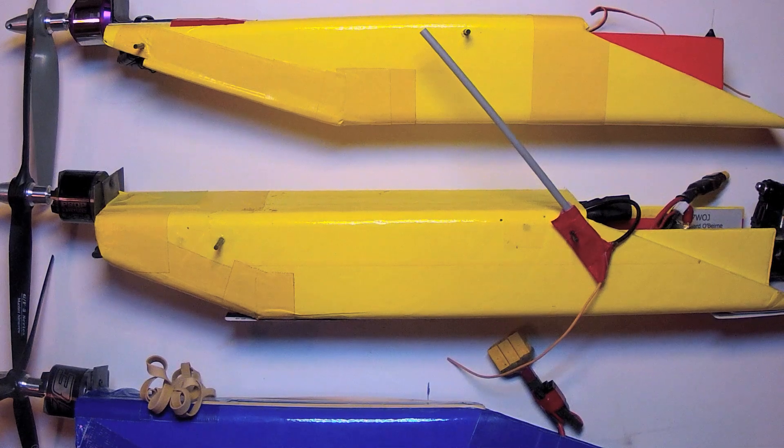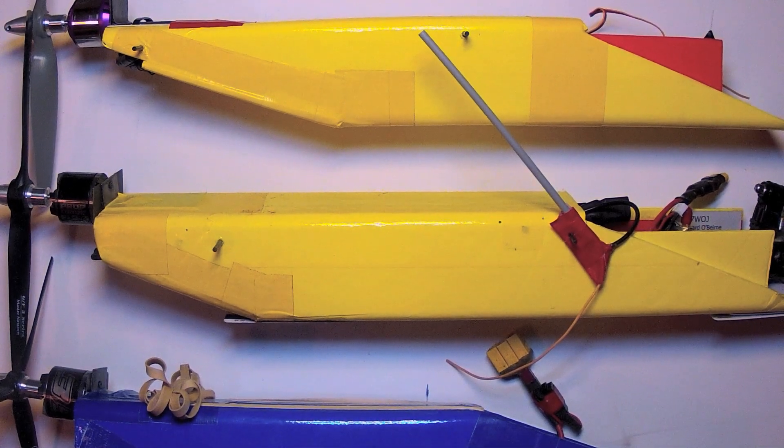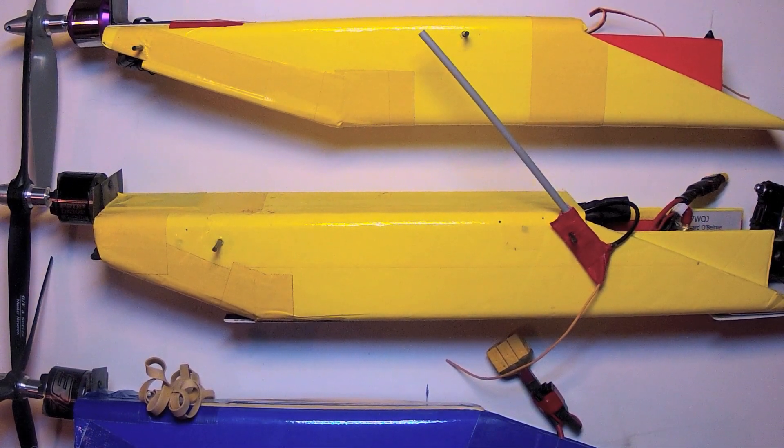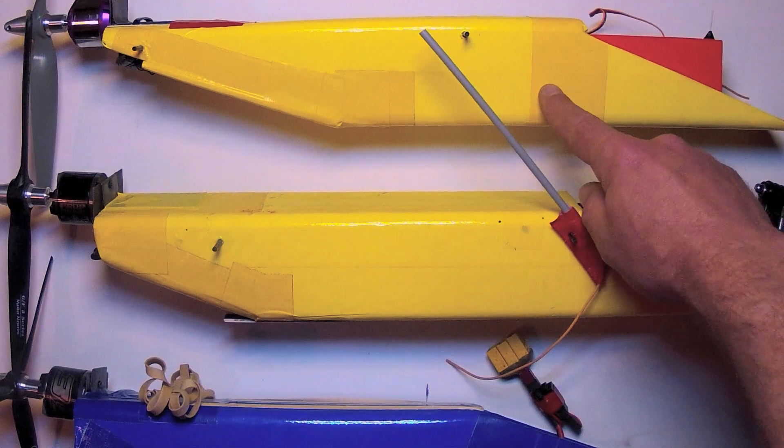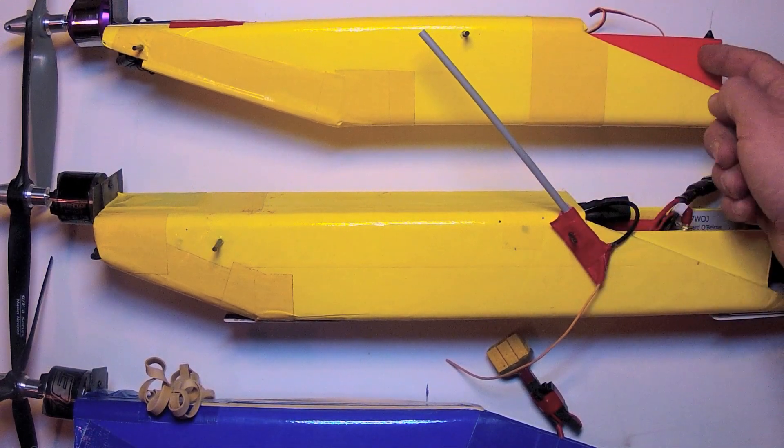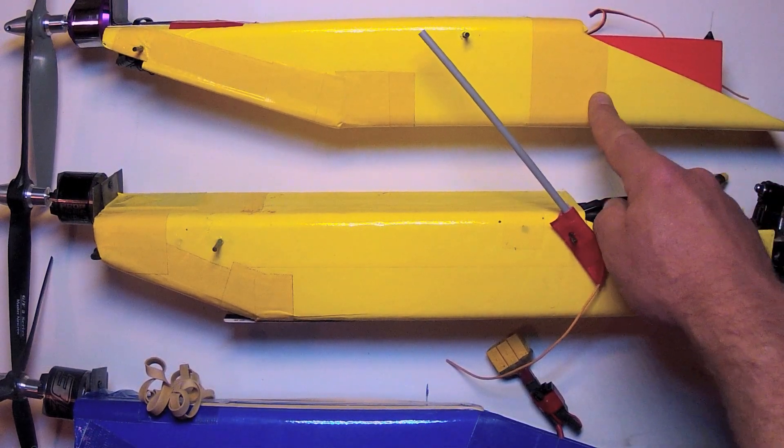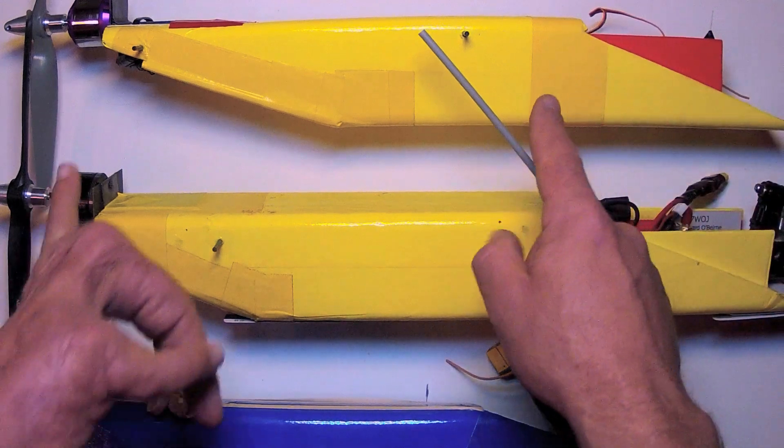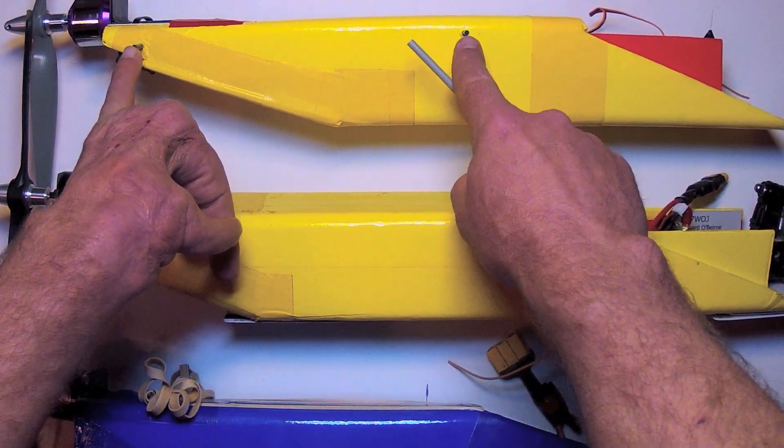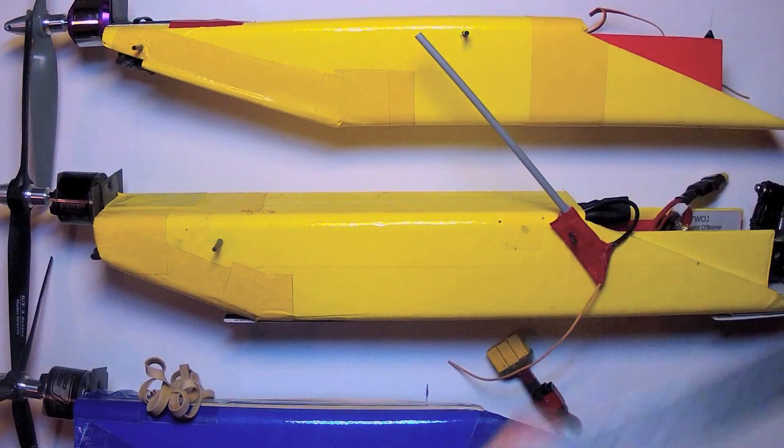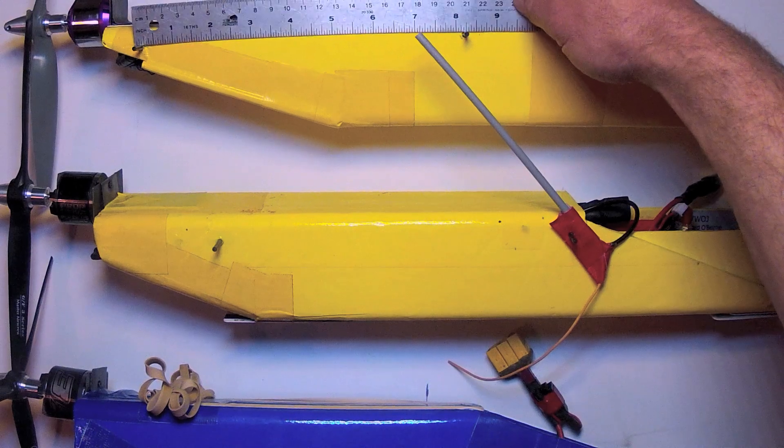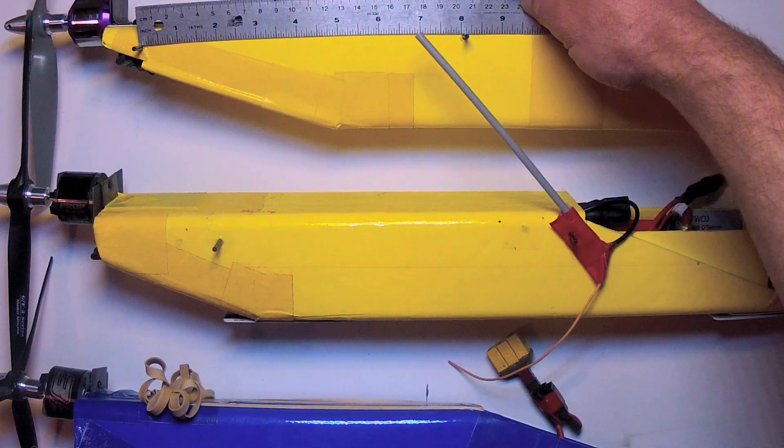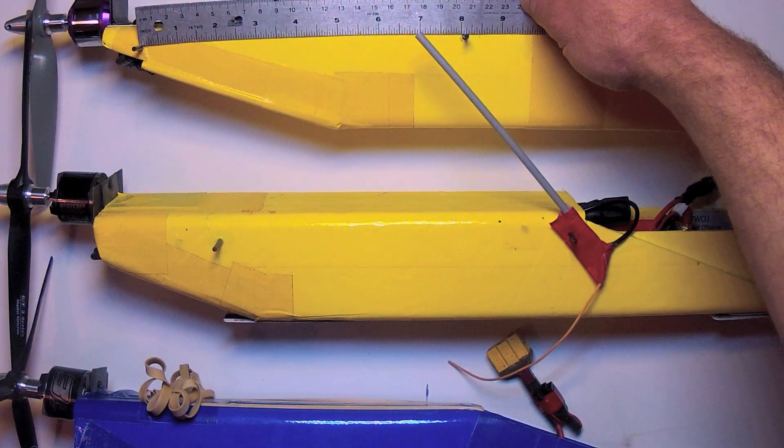Here I'll go over a few examples of different Synapse fuselage pods and where the wing tie-downs fall. Here's a fun flyer, very light, simple receiver, 2200 mAh battery, no camera or anything. The tie-downs are here and here, 8 inches apart because my wing is 8 inches at the root cord.